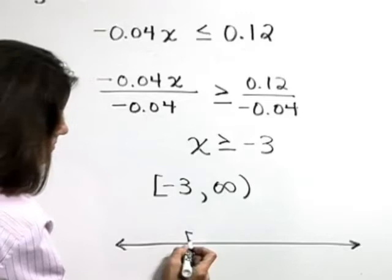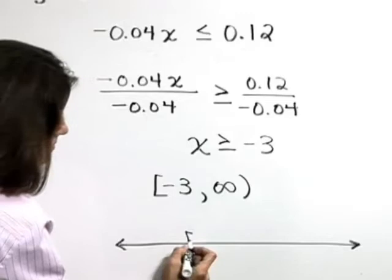We want to use a bracket around negative 3, just like we did in our interval notation, and identify these numbers that are greater than negative 3 out in the direction of positive infinity.